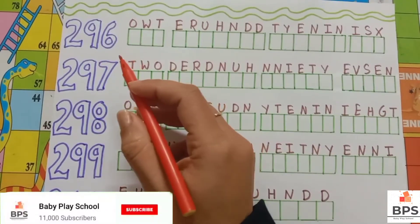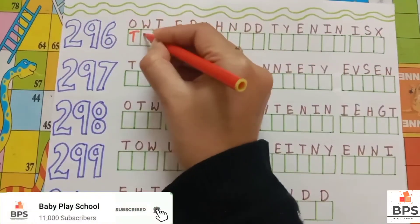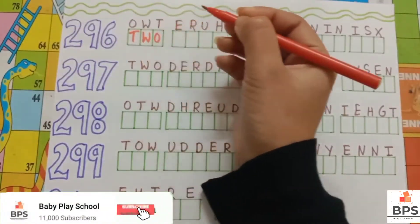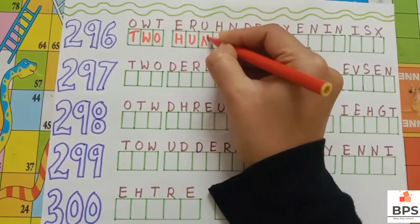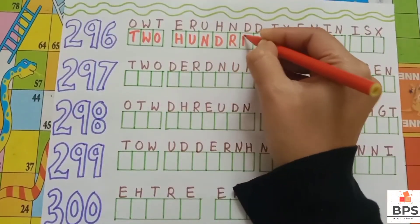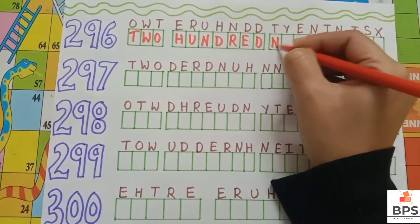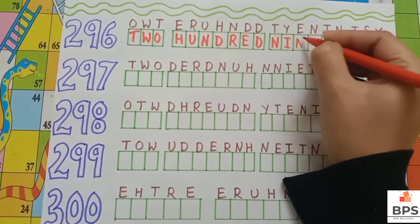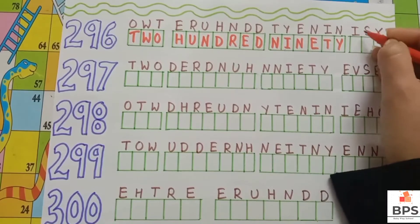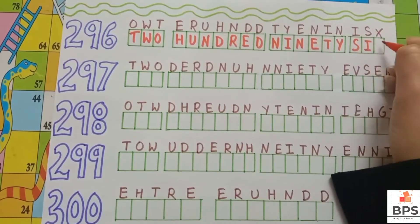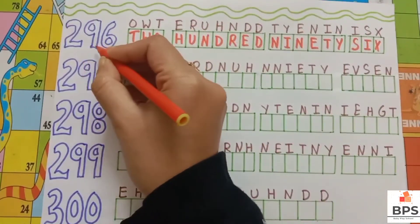Two nine six. Two hundred ninety six. T-W-O, two. H-U-N-D-R-E-D, hundred. N-I-N-E-T-Y, ninety. S-I-X, six. Two hundred ninety six.